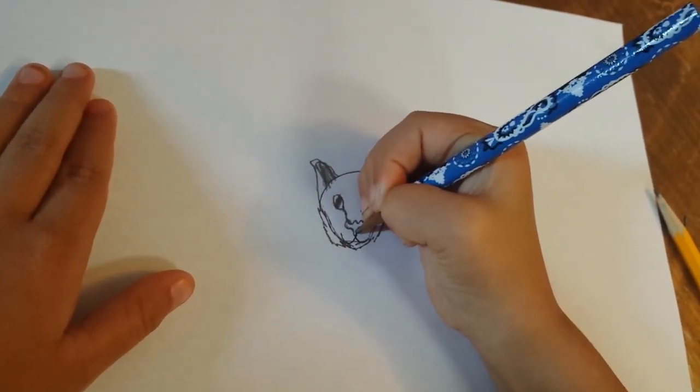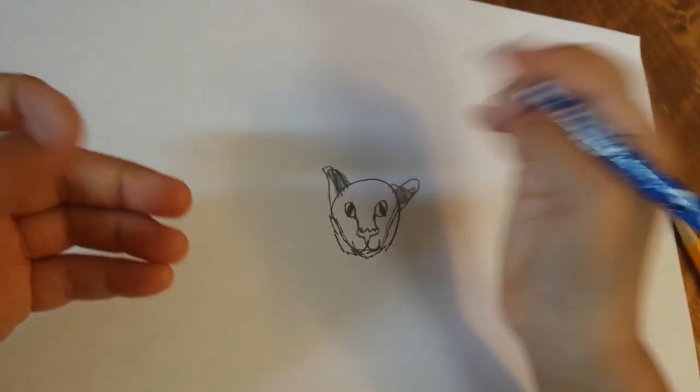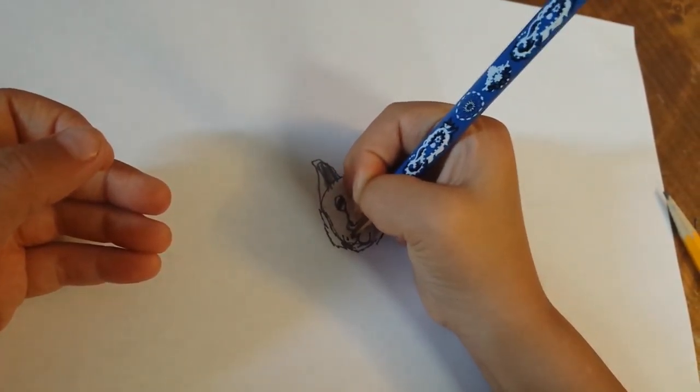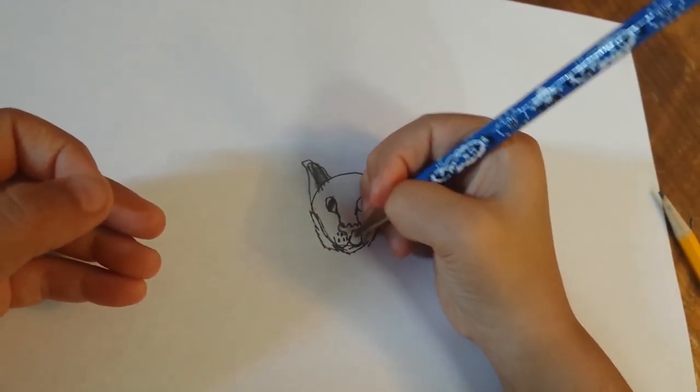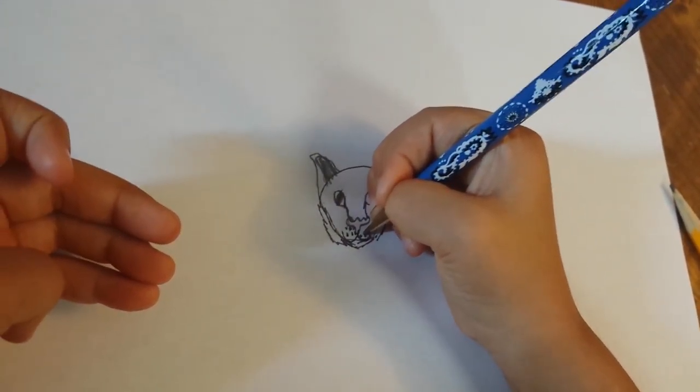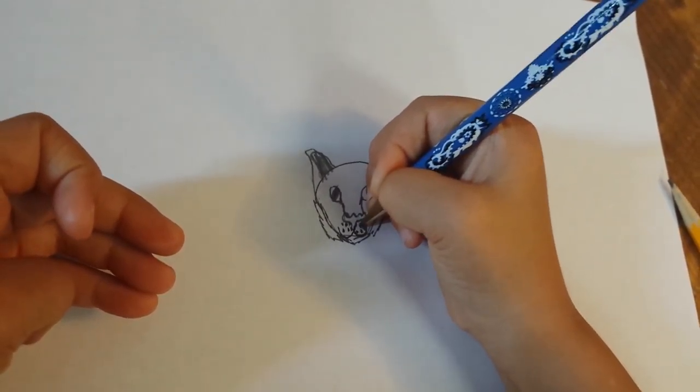a loop this way, down, up, and do the same thing on the other side. Then you do like a U here, U here, and that's the face.